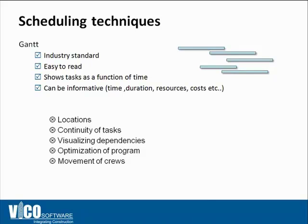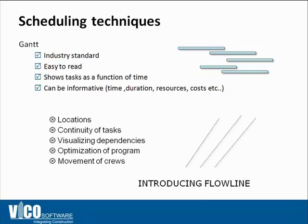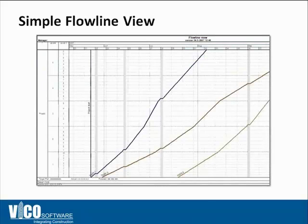Gantt charts don't show locations. They show locations only in the name of the task if you include it, or if you create your own location breakdown structure coding system and include it as a field in your Gantt chart schedule. They don't show continuity of tasks and do not allow you to visualize dependencies and optimize the movement of crews. Using Flowline, however, you'll be able to see all of that in just one single view.